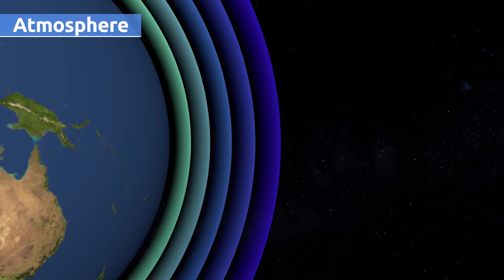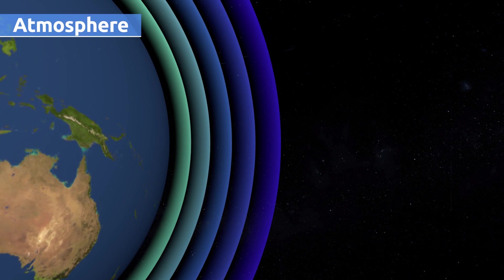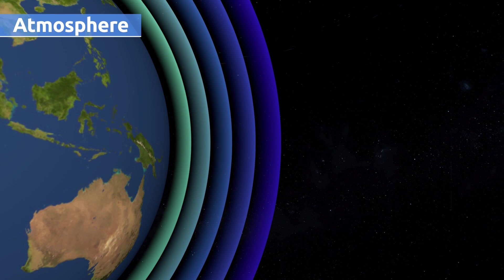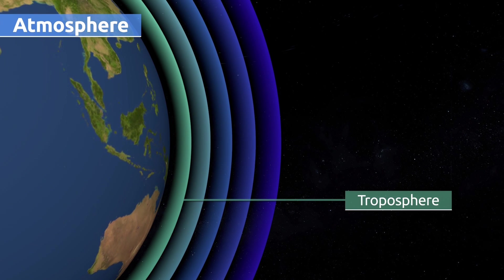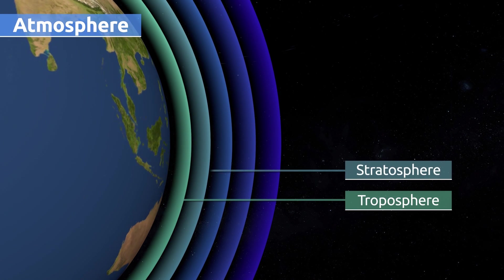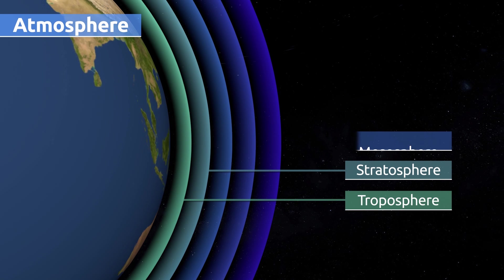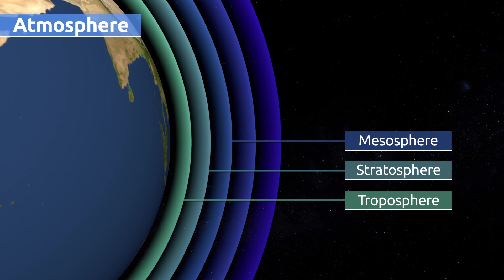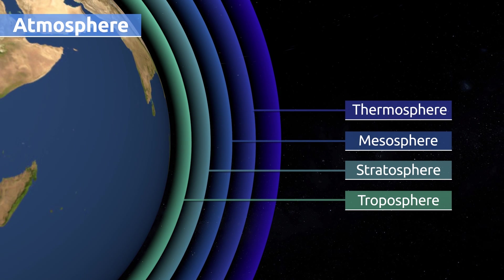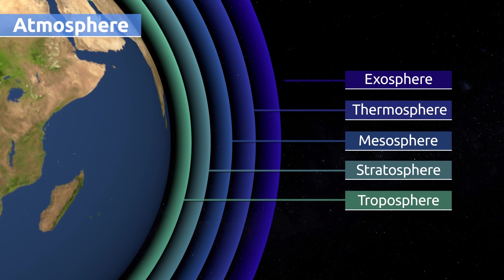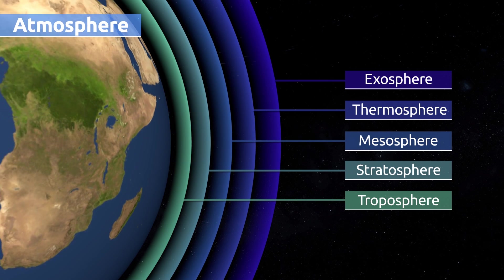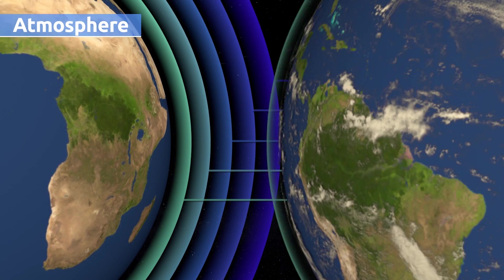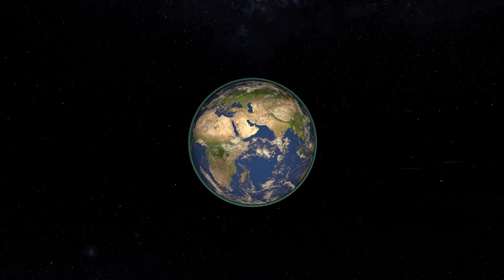The atmosphere is divided into five main layers: the troposphere, the stratosphere, the mesosphere, the thermosphere, and the exosphere.